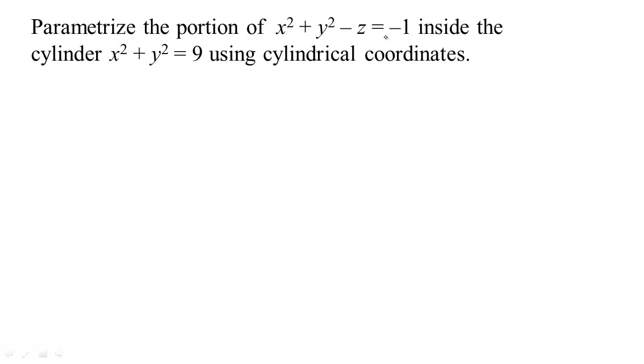Anytime you have a surface and you can rearrange it so that one variable is a function of the other two, then you have that easy parametrization. The two variables become the parameters and the third one is a function of those two. Another easy way to get parametrizations: if there's a nice equation for the surface in cylindrical coordinates or spherical coordinates, that can lead you to a new parametrization.